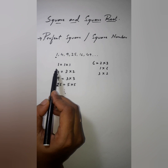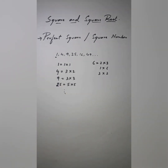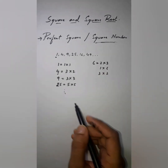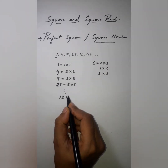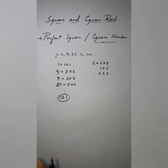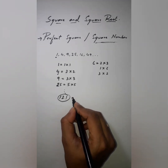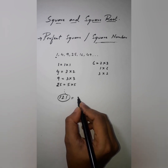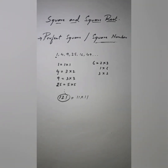So all the numbers we get after multiplying a number with itself — the product we get — is called a perfect square number, or simply a square number. For example, 121 is a perfect square number because it is the product of 11 and 11.